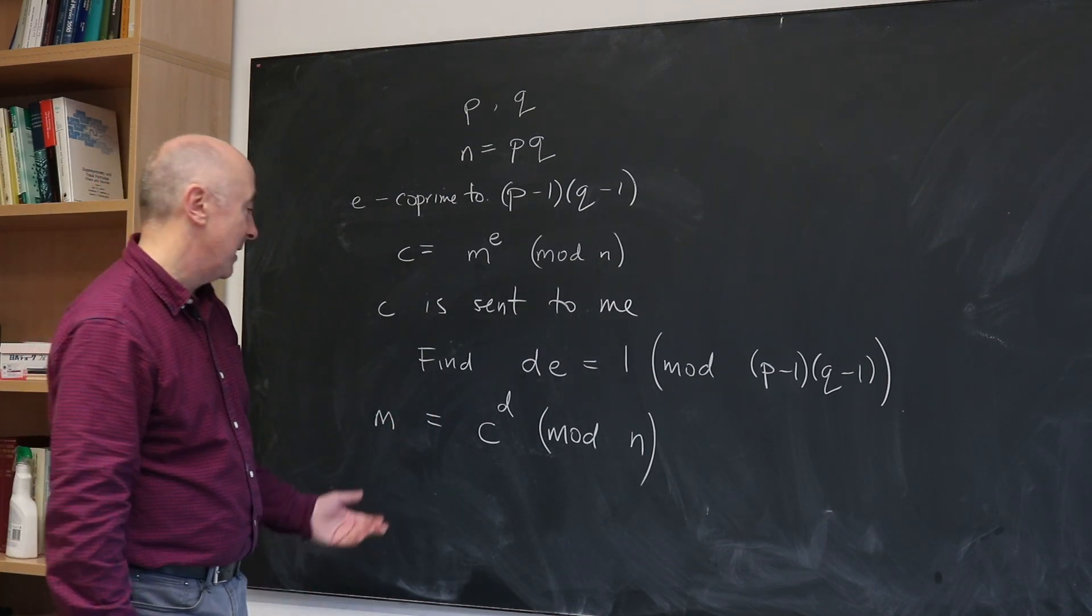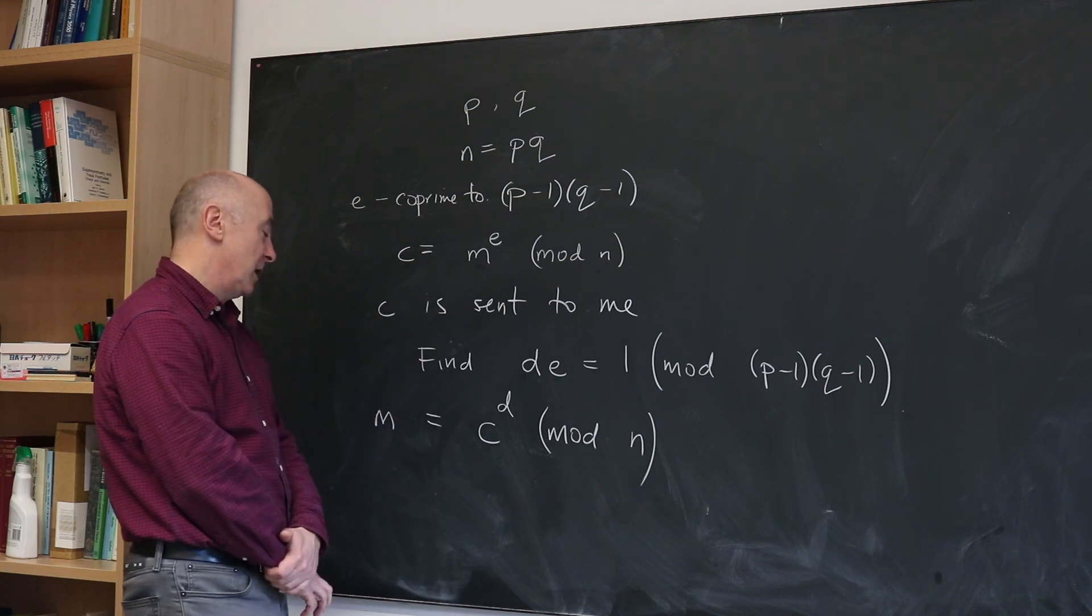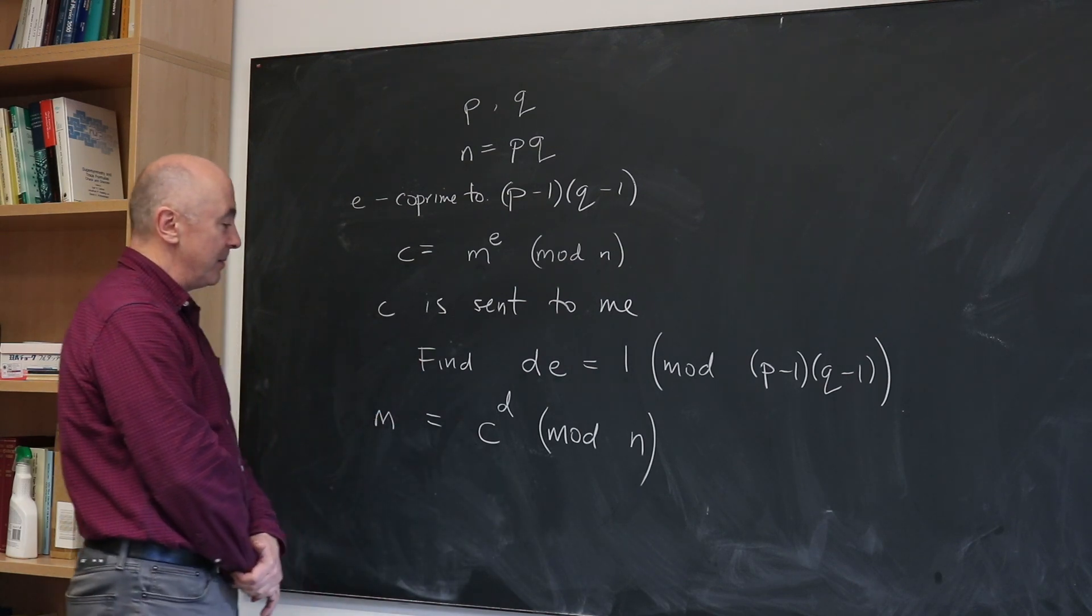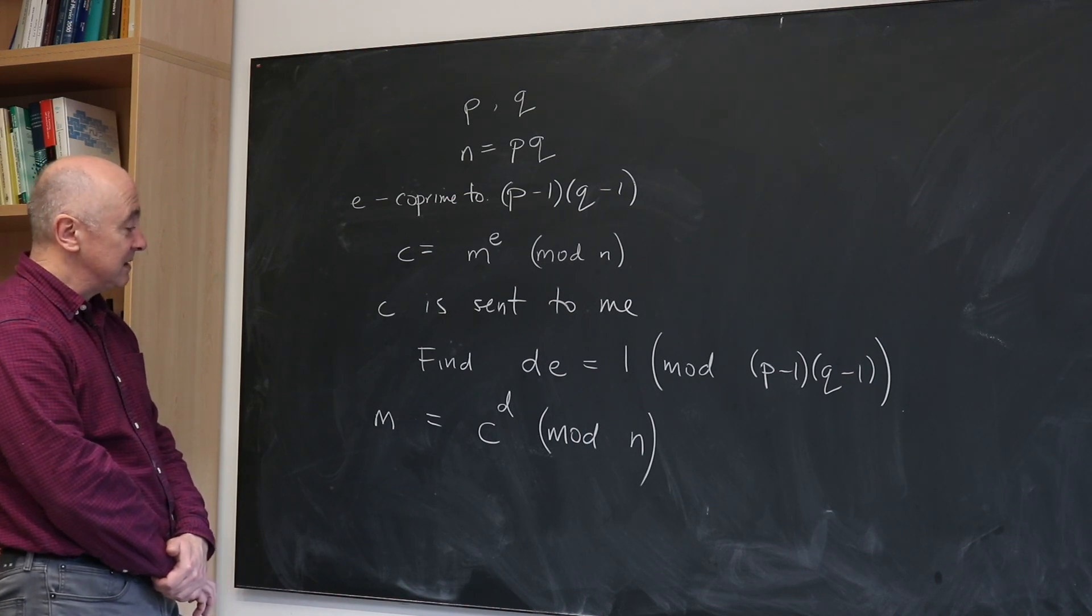It's a party trick. It's a miracle of the way that prime numbers work that if I do this, I get the number M back that they've sent me.